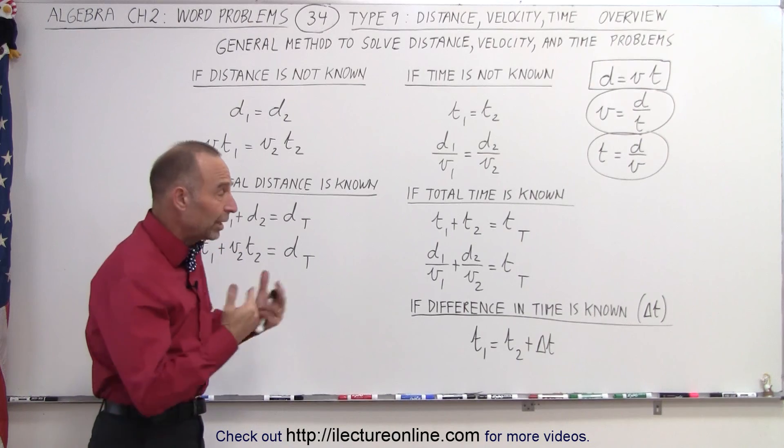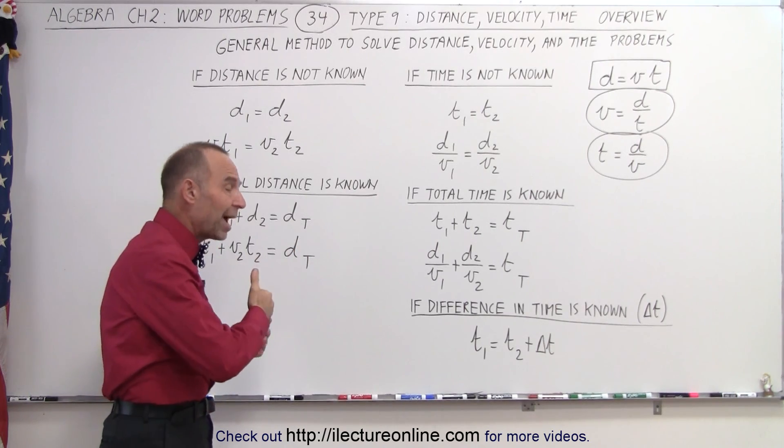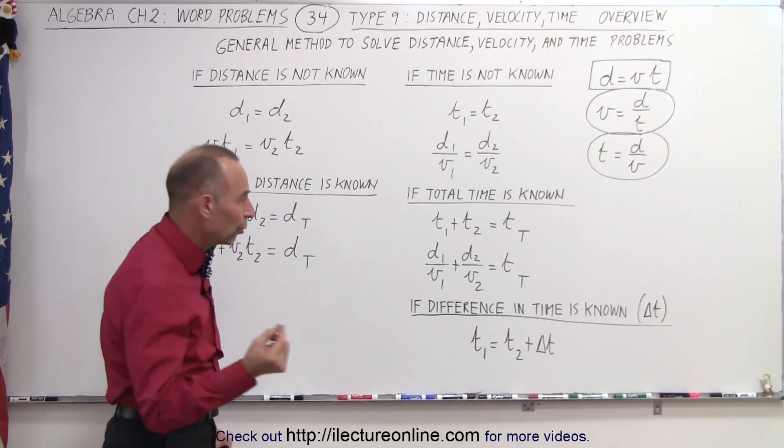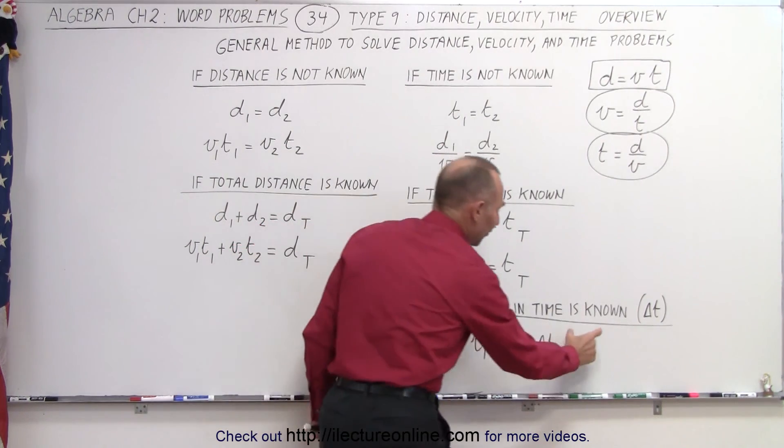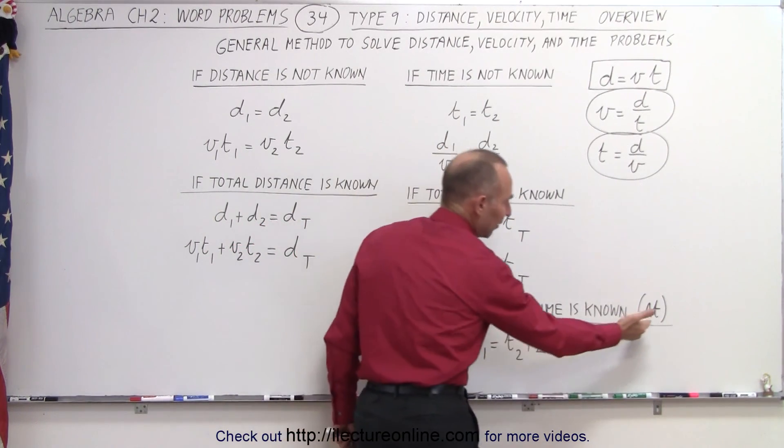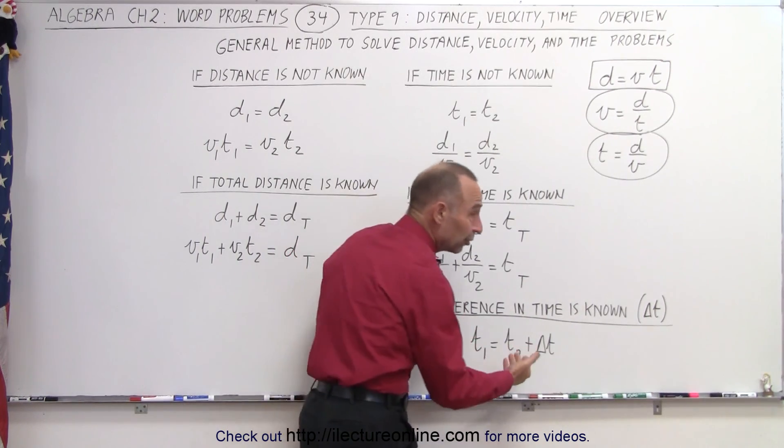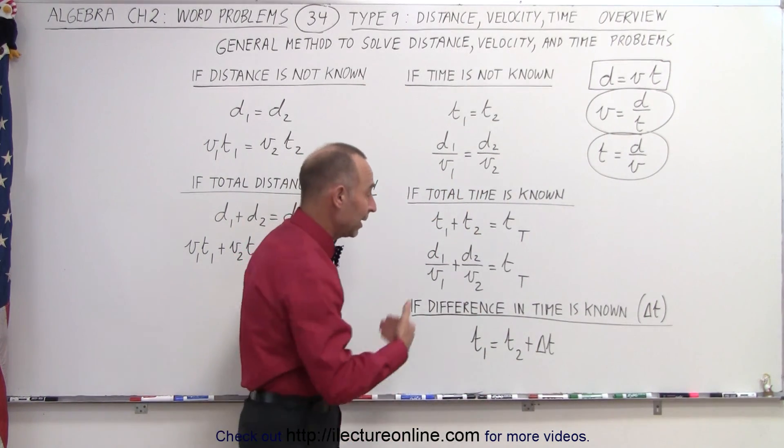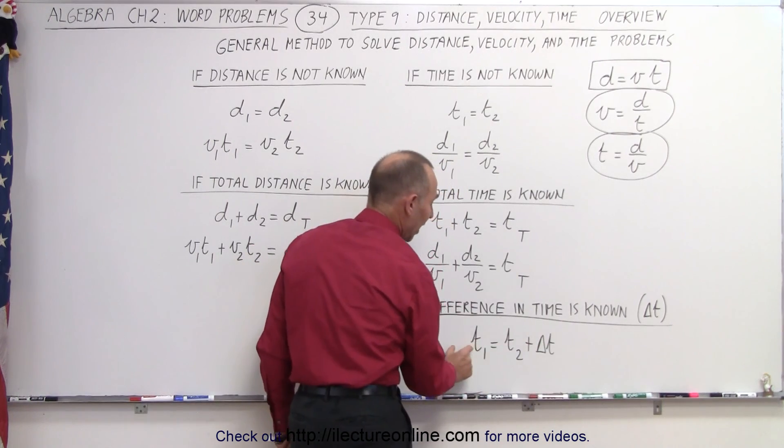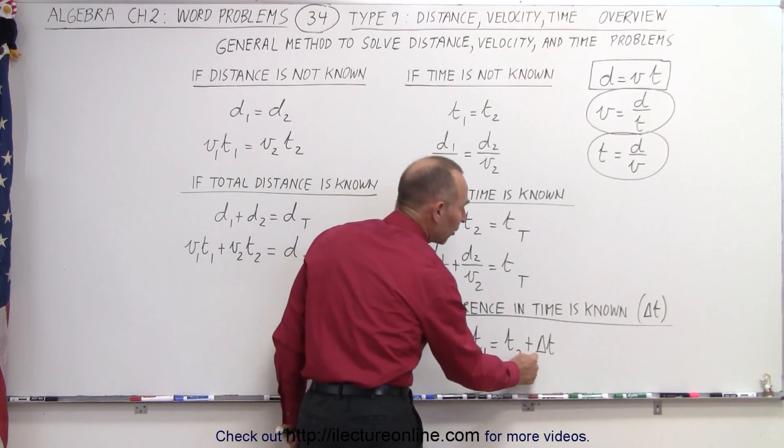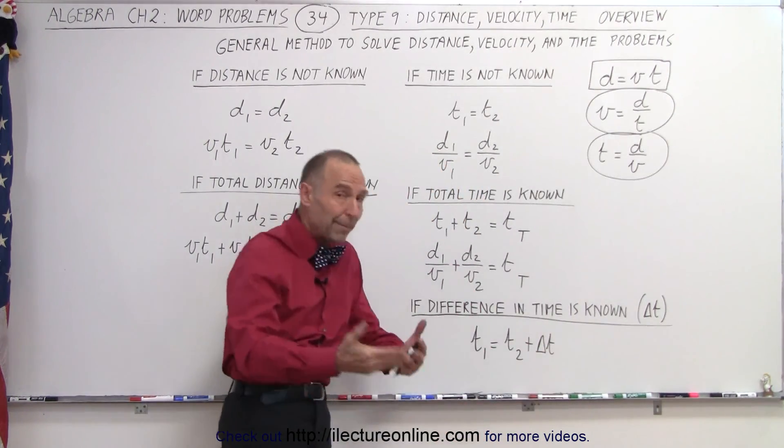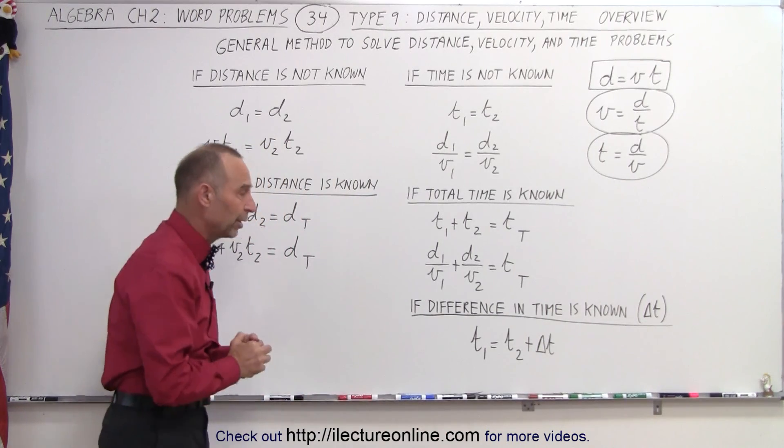Sometimes we know there's a relationship between the first time and the second time in terms of the delta between them, the difference. So whenever we talk about the difference or delta, that means that we know how much more time it took for one versus the other, or how much less time. And then we can simply write an equation where time one is equal to time two plus some difference between the two, or minus some difference, depending upon which way you want to write it.